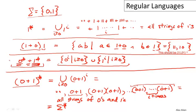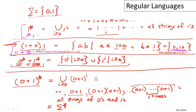One last point: there are actually many ways to write each of these languages — there's not a unique way. For example, for the language (one plus zero) concatenated with one, which denotes the strings one-one and zero-one, I could have written it as one-one plus zero-one, and that would mean exactly the same thing. Similarly, with one-star, I could write it as one-star plus one, because adding the single string one doesn't change anything since one is already included in one-star. The point is that multiple regular expressions can denote the same set.